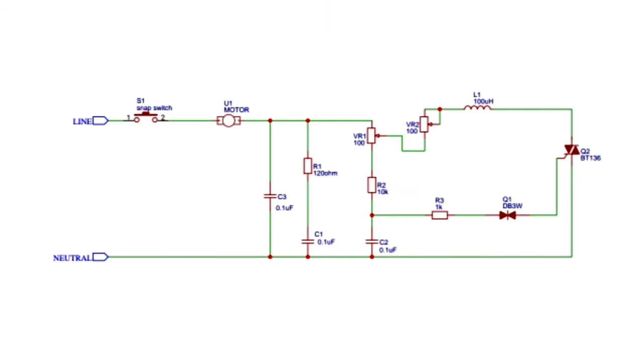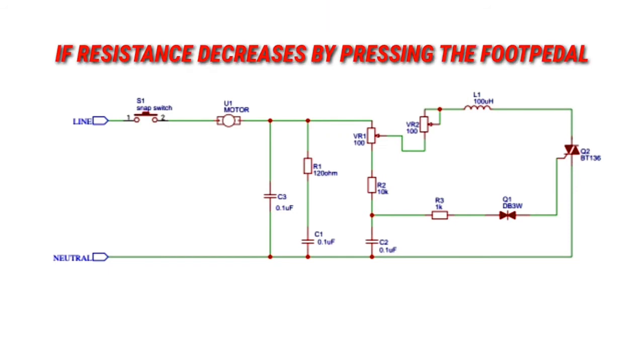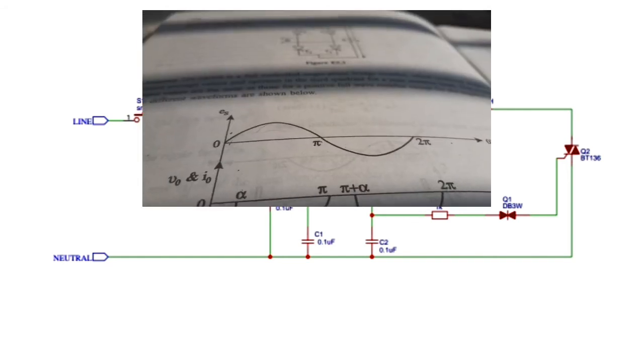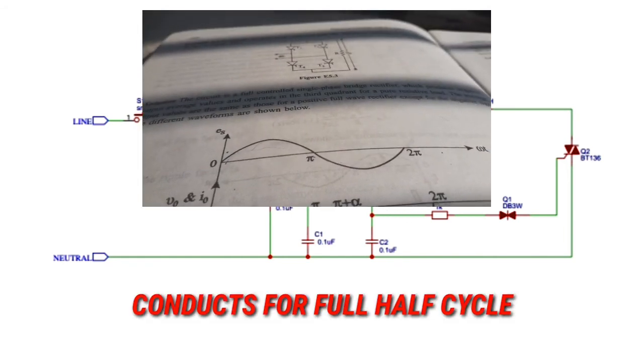But if the resistance decreases, the capacitor gets charged almost immediately and it turns on almost for a full half cycle from 0 to 180 degrees, and the speed of motor increases.